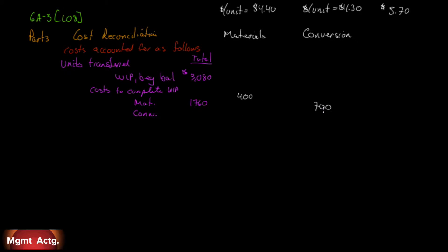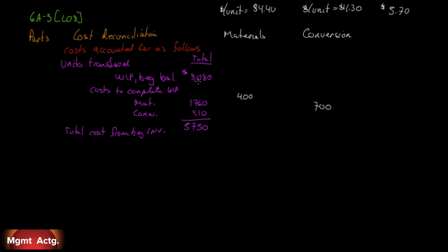There are 700 units that need to be completed in terms of conversion at $1.30 apiece — that's $910. So we add this up: this is what we had in beginning inventory, and this is how much we spent to complete that. This is the total cost from beginning inventory. There were 1,000 units in work in process at the beginning, and we spent this much money to complete those 1,000.